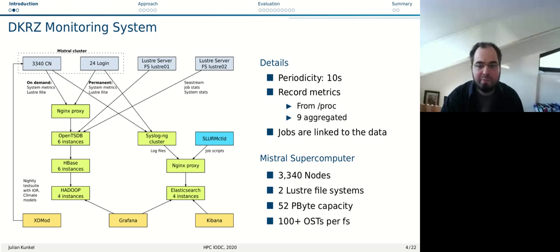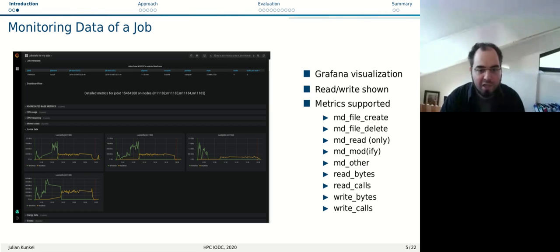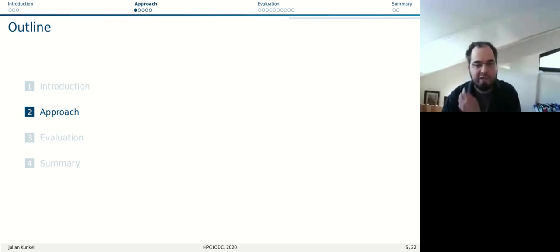This runs on the Mistral supercomputer, which is a 3000 node computer and 52 petabytes, more than 100 OSTs from Lustre. It's sufficiently decent big system to make this kind of fun. We initially used some existing collectors to capture data from proc, but we figured they were too intrusive. They took too much CPU resources, so we wrote a very simple Python tool to extract those metrics and pump them directly into OpenTSDB. We get every 10 seconds nine aggregated metrics. Here's a visualization for a specific job that ran on four nodes with those nice dashboards showing different statistics.